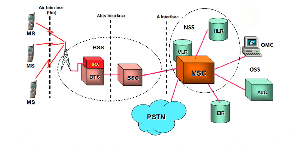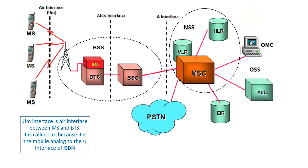Now we are going to learn about the different interfaces. There are mainly three interfaces: the AIR interface, the ABIS interface, and the A interface. The AIR interface is also called the UM interface — it is the interface between the mobile station and the BTS. It is called UM because it is the mobile analog to the U interface of ISDN.